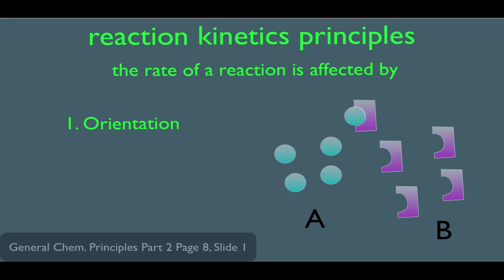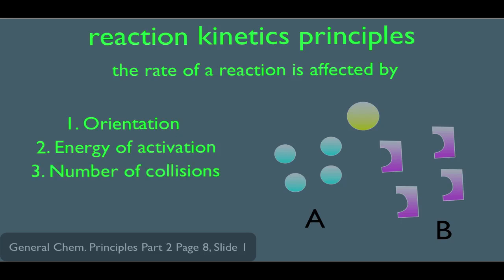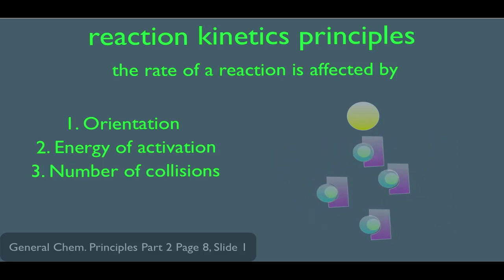The second factor is called energy of activation. This means if A and B meet up in the correct orientation, they also have to have a certain amount of energy in order to turn them into product. If there is enough energy, they turn into product. Another factor that affects rate is the number of collisions. The more A's and B's that combine, the more product you're going to get.